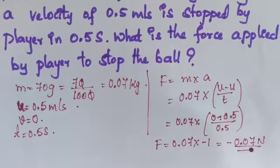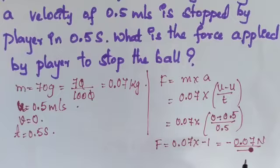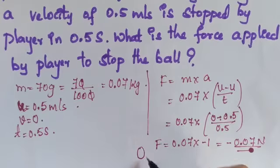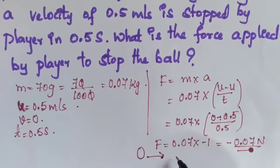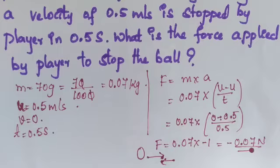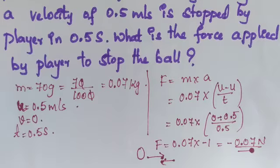Force is minus 0.07 Newton. The negative sign means the player applied force in the opposite direction to the ball's motion — the ball is coming in one direction and the player applied force in the opposite direction, which is why the ball stopped. The negative sign indicates force is opposite to the direction of motion of the ball.